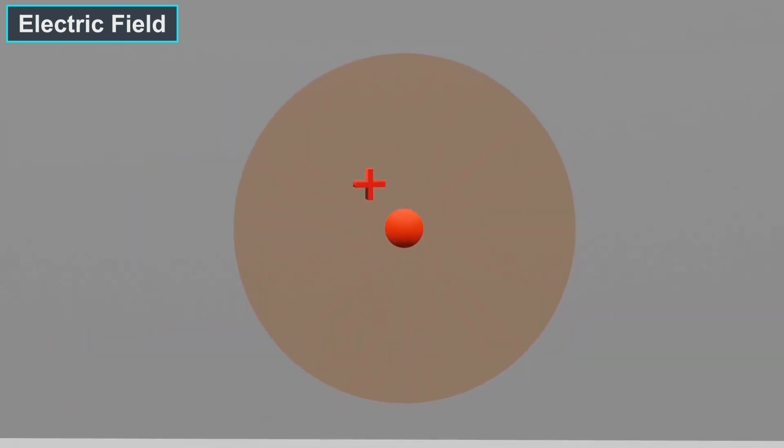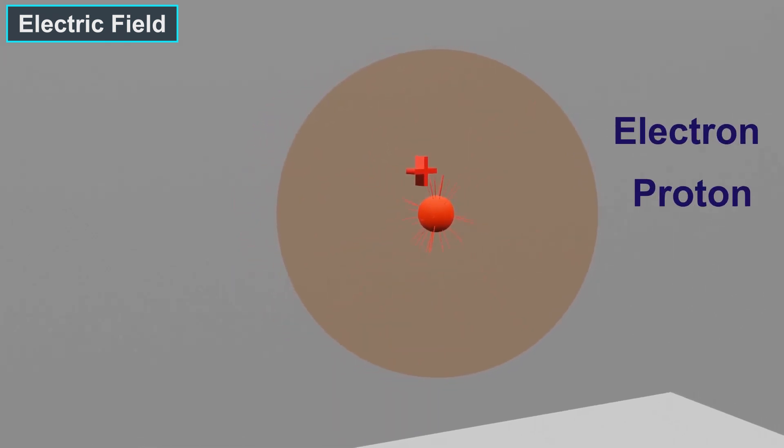Electric fields are generated by electric charges. When a charged particle, such as an electron or proton, is either static or in motion, it generates an electric field around itself.